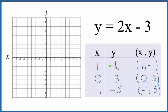x is 1, y is negative 1. So we go 1, negative 1. x is 0, y is negative 3. x is 0, y is negative 3. And finally we have x is negative 1, y is negative 5. Negative 1, and we go down to negative 5.